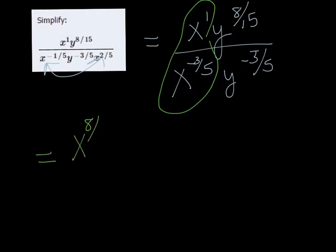Now since it's positive, I'll just keep it in the top. And then the y is the same thing. I can use the quotient rule to subtract their exponents. So we get 8 fifteenths minus a negative 3 fifths.